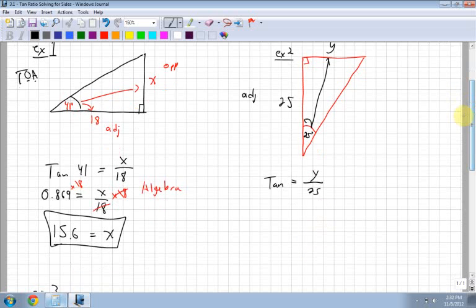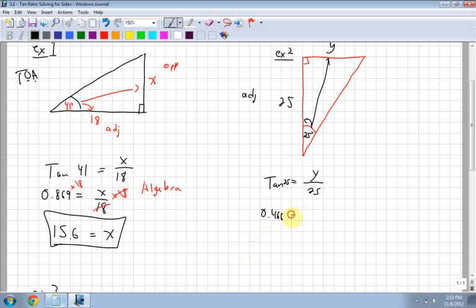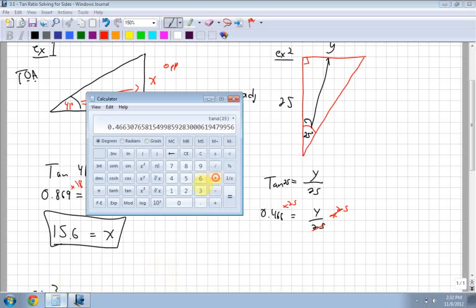So then what do I do? Same thing as before. Tan of, whoops, I forgot my angle, 25 degrees. So tan of 25 degrees. That's what I would work out first. 25, then hit tan. So 0.466 is equal to y over 25. And then again, with algebra, I multiply by my 25 on both sides to get rid of it on the bottom. So I have 0.466 times by my 25, which is equal to 11.7.